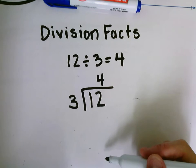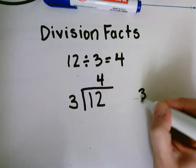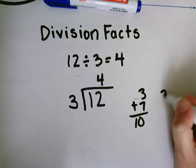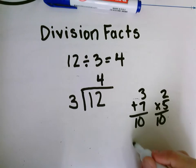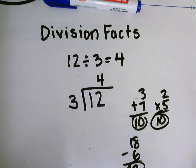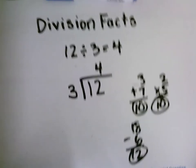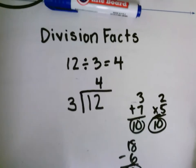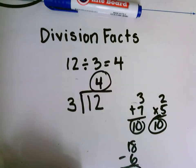Our quotient is actually on top. All of our other times that we do a long problem like 3 plus 7 equals 10, 2 times 5 equals 10, 18 minus 6 equals 12, all of these our answer is on the bottom. But when we're dividing you notice that our answer is on the top.